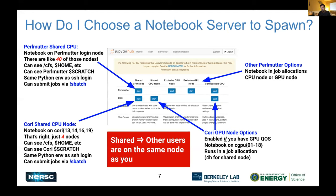On Cori, all notebook servers started on login nodes are restricted to just four login nodes. So it's probably a better idea these days to start a Jupyter notebook server on a Perlmutter login node. Before the talk, I counted: there are about 300 notebook servers running right now on Cori crammed into those four nodes, and about 100 running on Perlmutter spread out over 40 login nodes. On Cori, you can see the CFS and home directories and Cori scratch, but you cannot see Perlmutter scratch from Cori and vice versa.